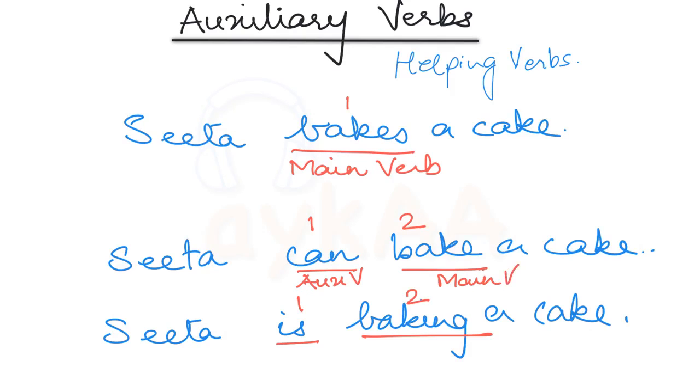So can bake, can is the auxiliary verb and bake is the main verb. Is baking, is is the auxiliary verb and baking is the main verb.